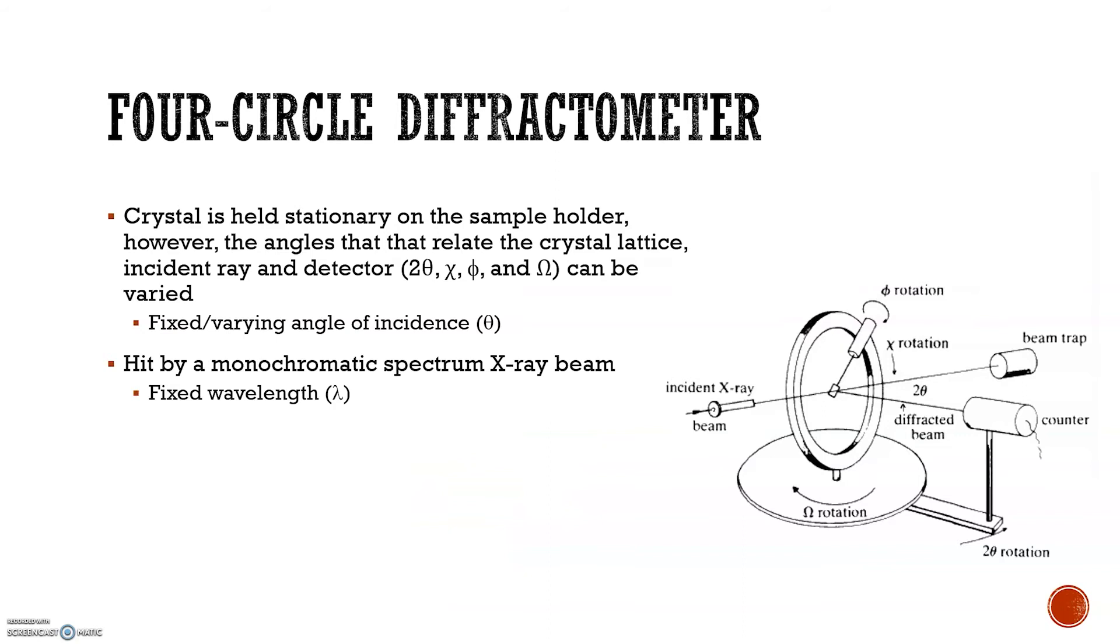The four-circle diffractometer method is a cross between the Lau and the rotating crystal method. It may not really deserve its own category, but it's interesting, so let's talk about it.